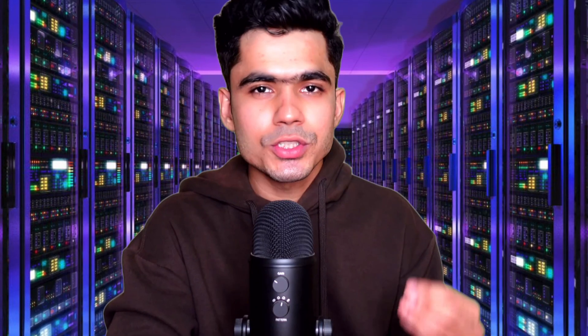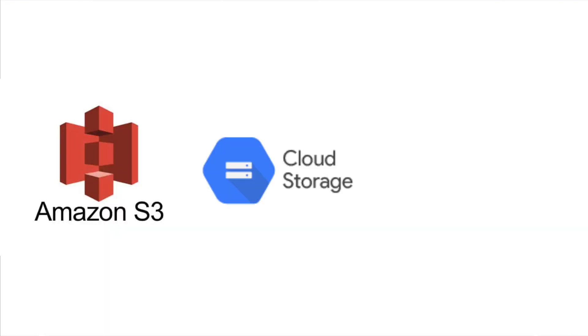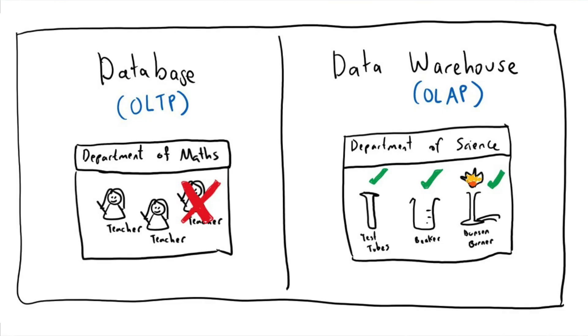You can store your data in multiple places. One is object storage — you can store your data on Amazon S3, Google Cloud Storage, or Azure Data Blob. Or we can use a data warehouse. We basically have two types of systems: OLTP, Online Transactional Processing, and OLAP, Online Analytical Processing.